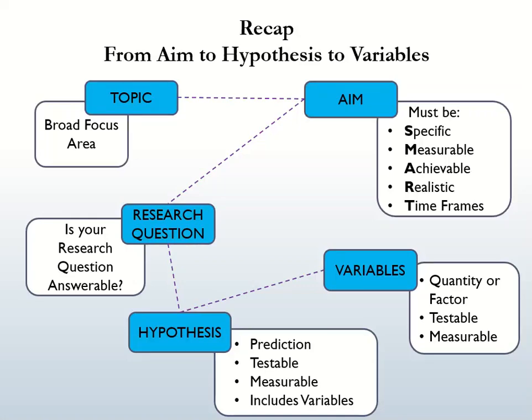You started with a topic and the problem you wanted to solve, then narrowed down your focus to the aim, the research question, and the hypothesis. Think of this as traveling through a funnel, going from broad and general to narrow and specific. So how are the aim, research question, hypothesis, and variables linked to your research? The aim is a broad statement of what you hope to achieve at the end of your research.